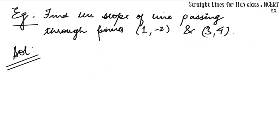We will take an example. Find the slope of the line passing through points (1,-2) and (3,4). Here we will make up a line and take up two points P and Q with respective coordinates (1,-2) and (3,4).